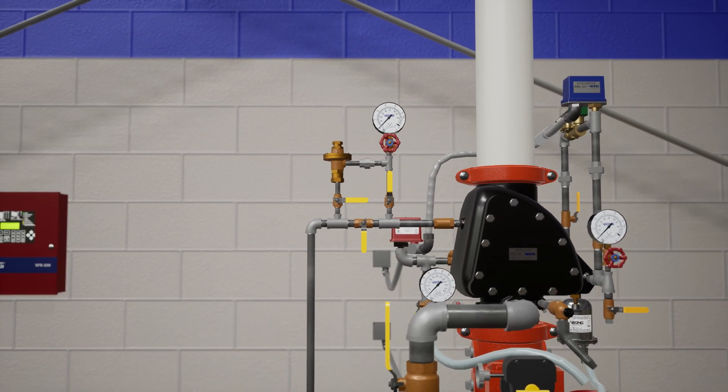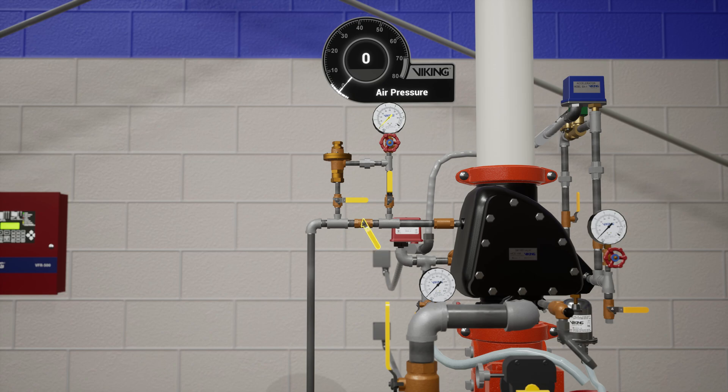Next, reestablish the system air pressure within 5 psi of the set pressure by opening the air bypass valve. Once pressure has been reestablished, close the air bypass valve.